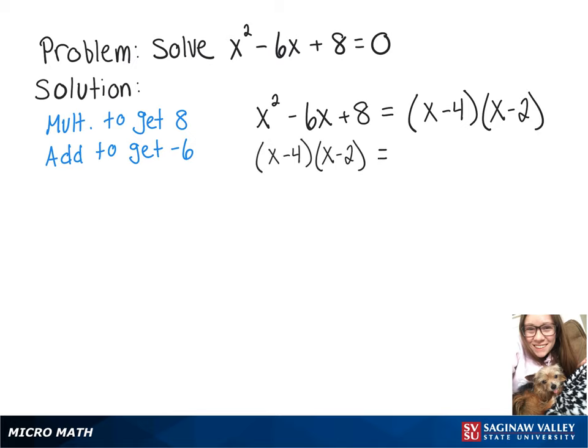And then that is still going to be equal to 0. So now we can solve either x minus 4 equals 0, or we can solve x minus 2 equals 0.